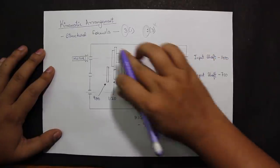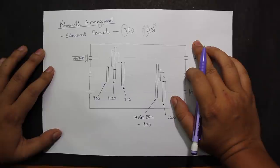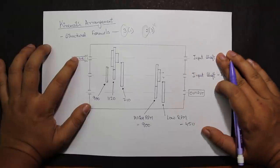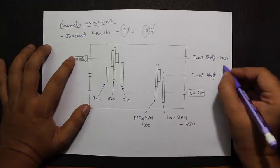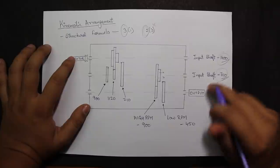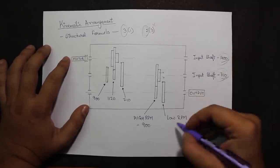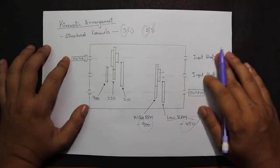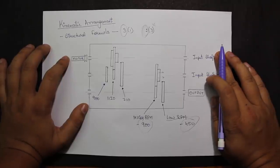The three-gear arrangement is constructed accordingly. The motor is attached to the left side of the shaft, which is the input at 1400 rpm (the maximum input). The next input is 710 rpm, as established during the ray diagram stage, and the output is obtained from there. The larger gear carries the lower rpm (450) and the smaller gear the higher rpm (900), completing the kinematic arrangement for the 6-speed gearbox.